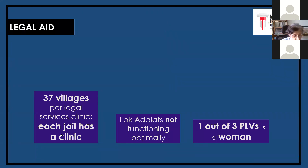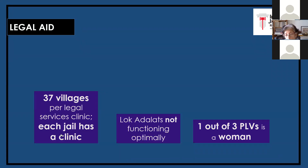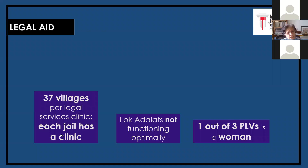Regarding legal aid — regulations say every cluster of four or five villages should have a small legal aid clinic. We found the national average is about 42 villages per legal aid clinic. In various states, a legal aid clinic is not available for even 100 villages. This evens to the national average but masks large disparities.